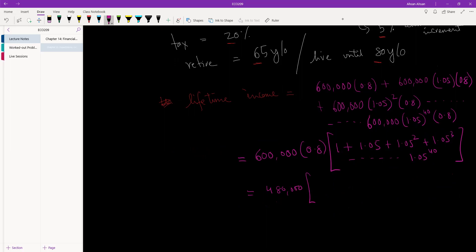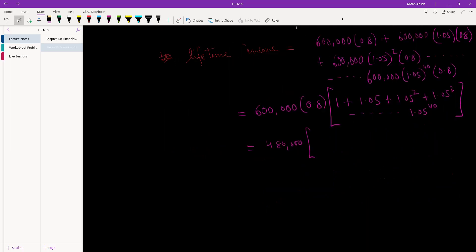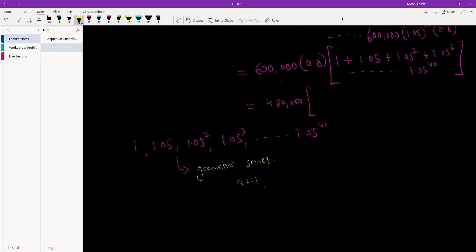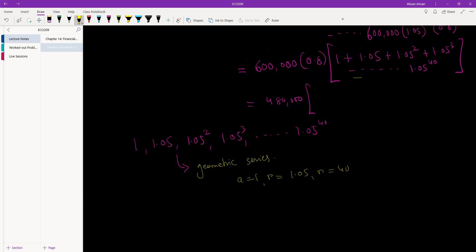We have a geometric series with, let me write this down, the series is 1, 1.05, 1.05 squared, 1.05 cubed. So on, until we stop at 1.05 to the power 40. So this is a geometric series, let me write that down. Where the first term, A, is 1, the ratio is 1.05, and the number of terms is 40. So,